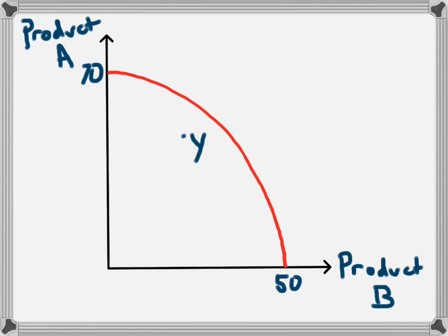We tend to think of unemployment in terms of human resources. So if there are human workers who aren't working, the economy cannot produce its maximum output and will operate inside the production possibility frontier. If the economy was able to use those resources, then point Y could move out and end up on the production possibility frontier.